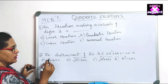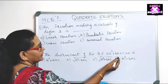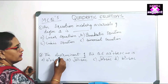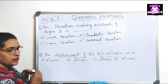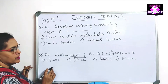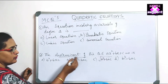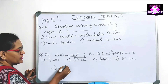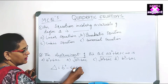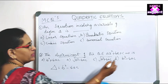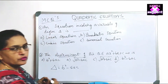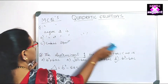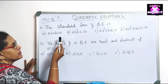MCQ: The discriminant of the quadratic equation ax² + bx + c = 0 is — ? This is a formula-based question. The discriminant is Δ = b² − 4ac, which corresponds to option D, so D is the correct answer.